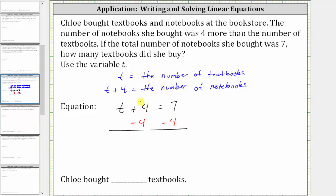Simplifying, four minus four is zero. The left side simplifies to t. T is equal to seven minus four, which is equal to three. So now we know Chloe bought three textbooks.